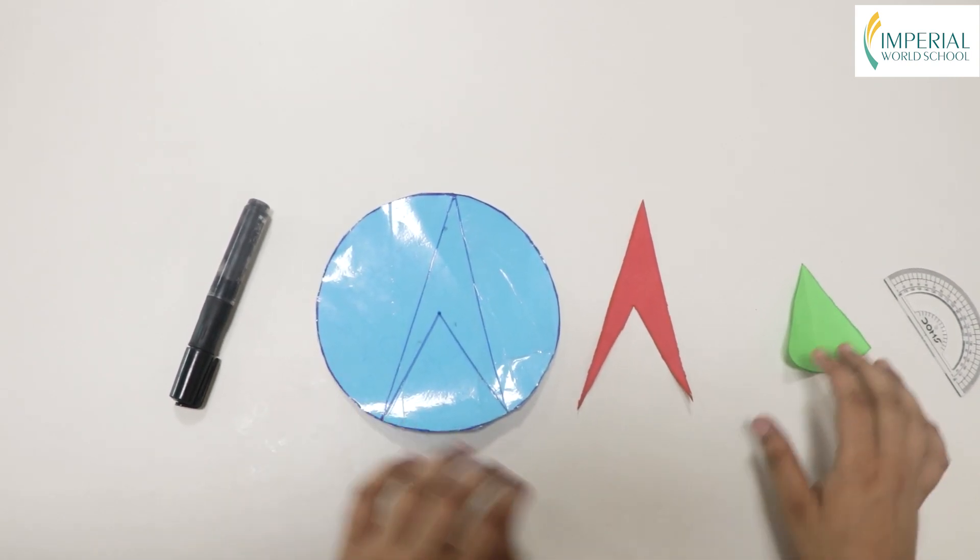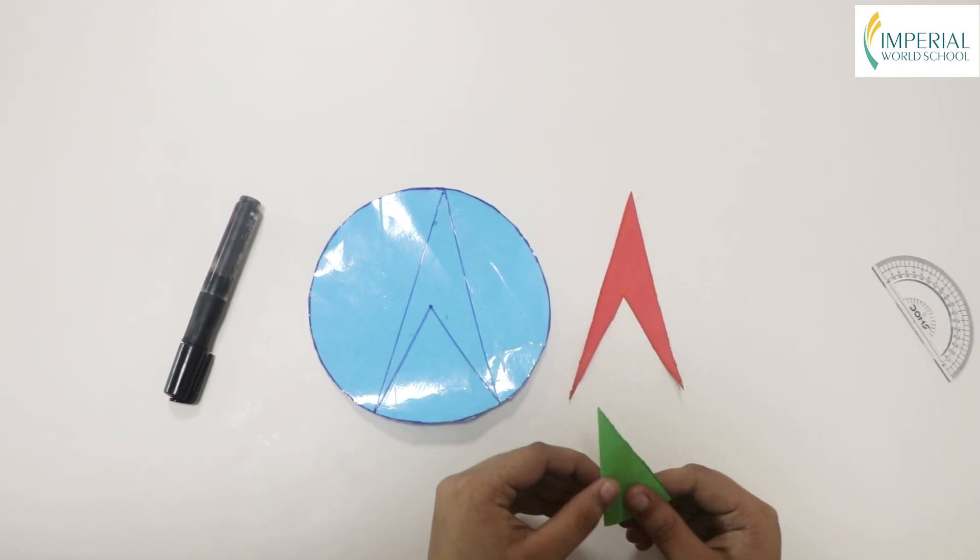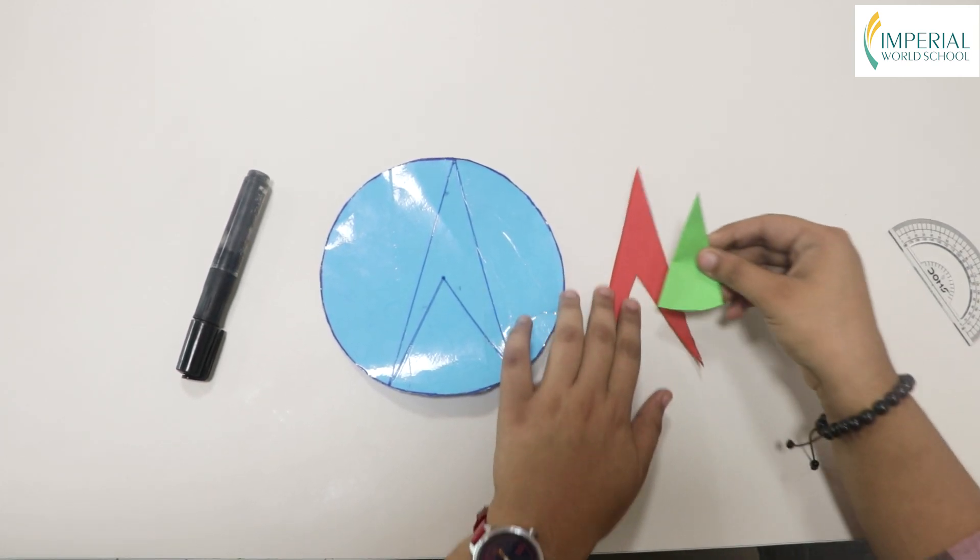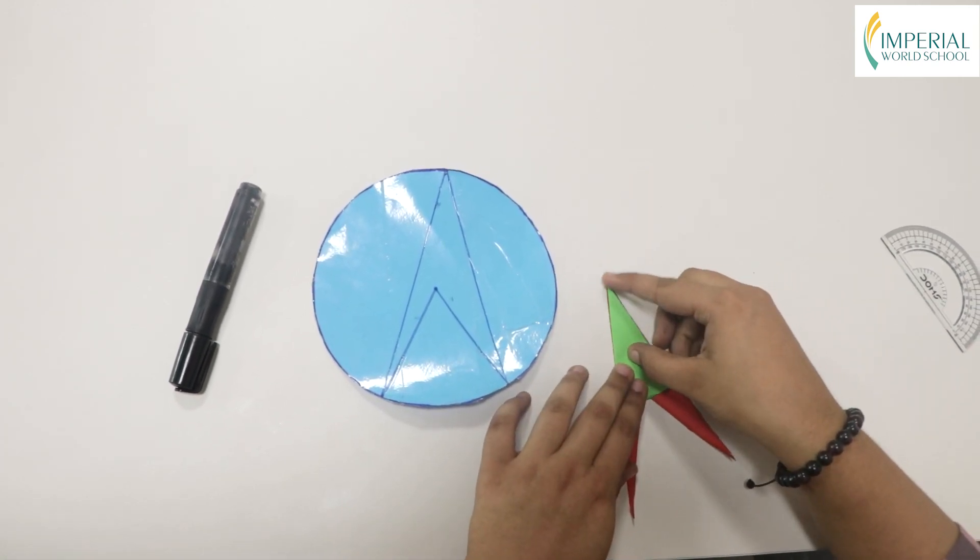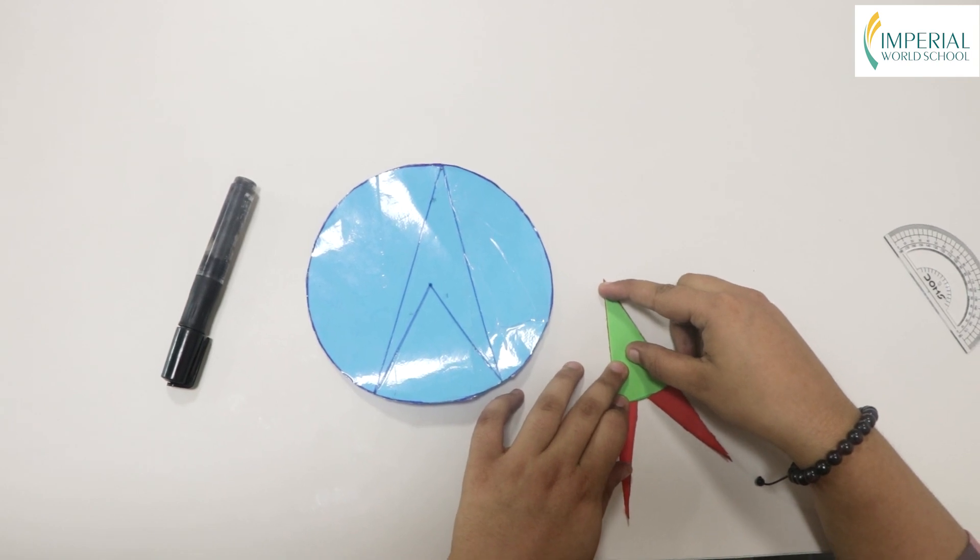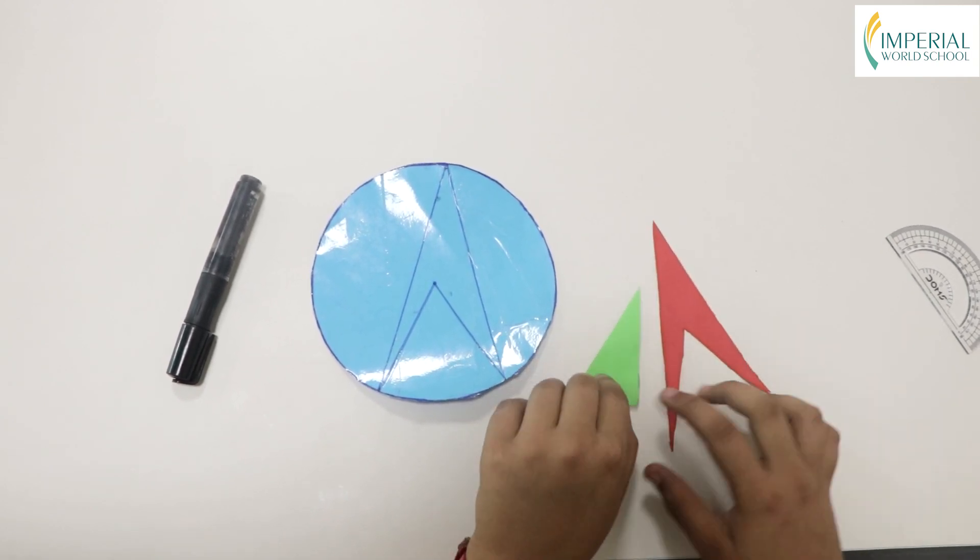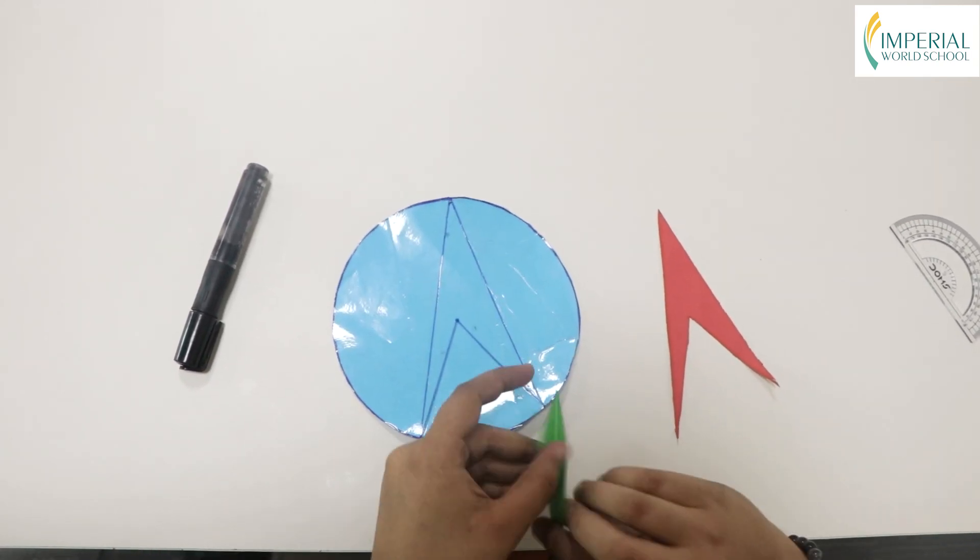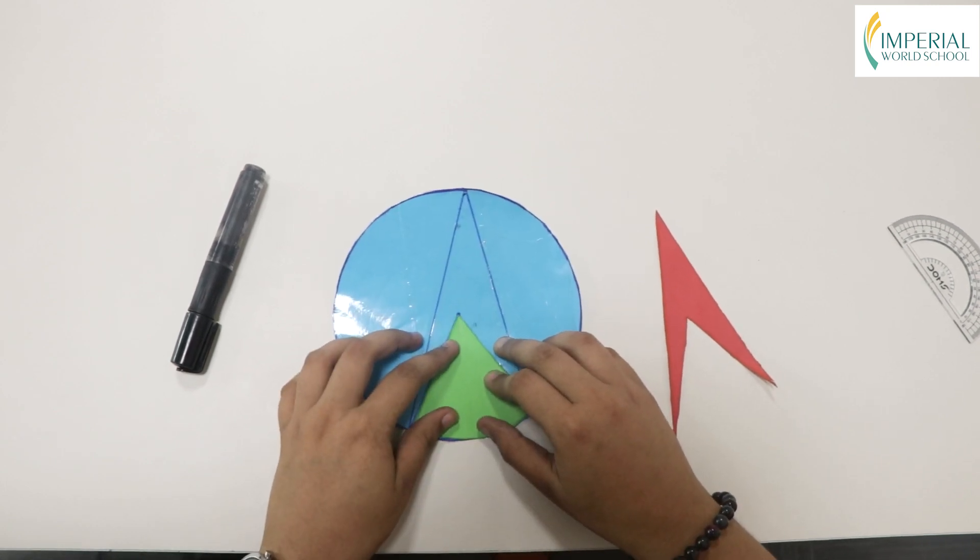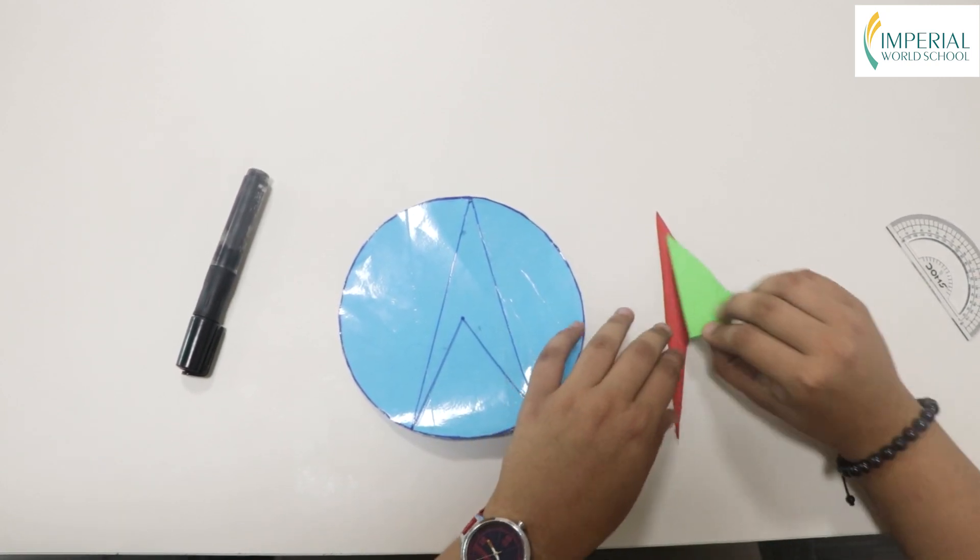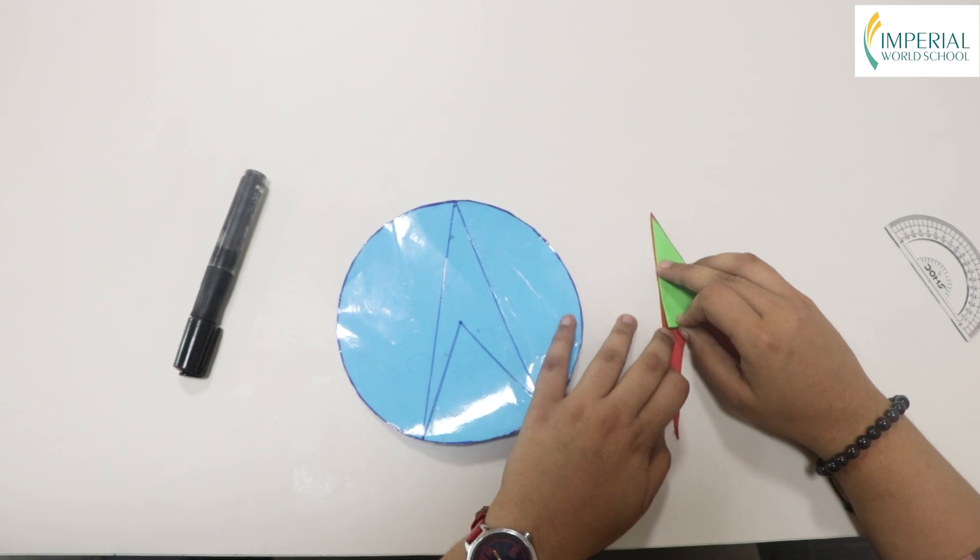So if I fold this piece, you can actually see that it is equal to the inscribed angle. This also proves that the central angle here is actually double the inscribed angle.